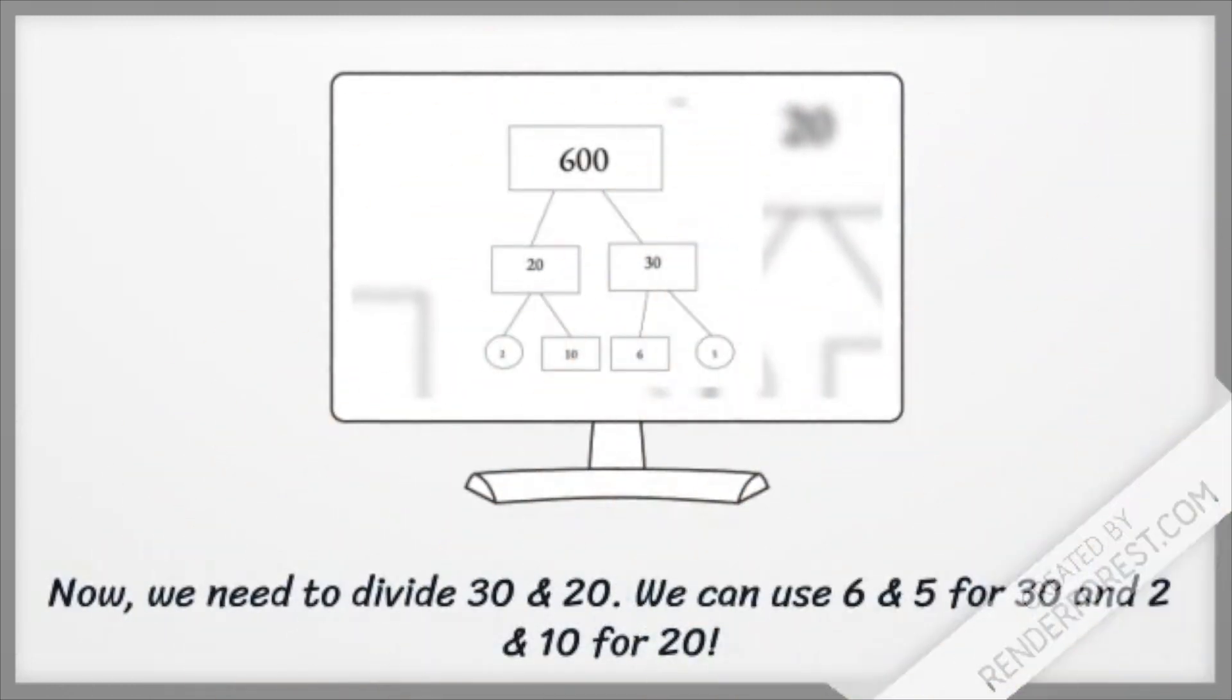Now, we need to divide 30 and 20. We can use 6 and 5 for 30 and 2 and 10 for 20.